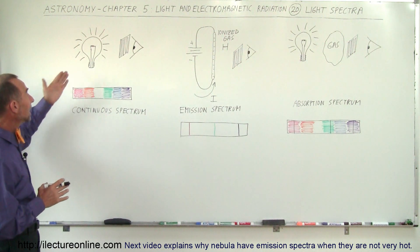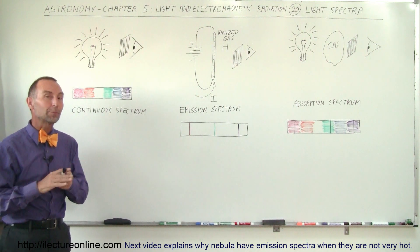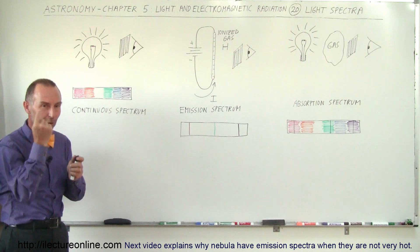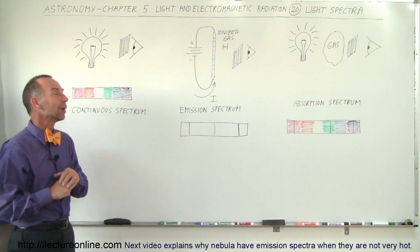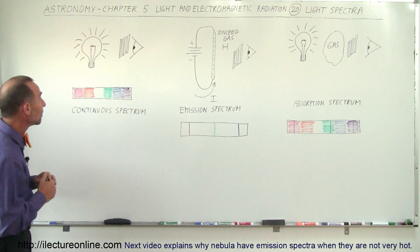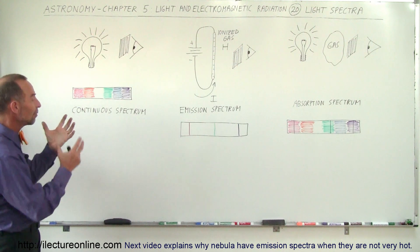For example, if we have an incandescent light bulb - and yes, incandescent light bulbs are slowly disappearing, they're all being replaced by those small little curly Q light bulbs, the fluorescent ones, because they're a lot more energy efficient.